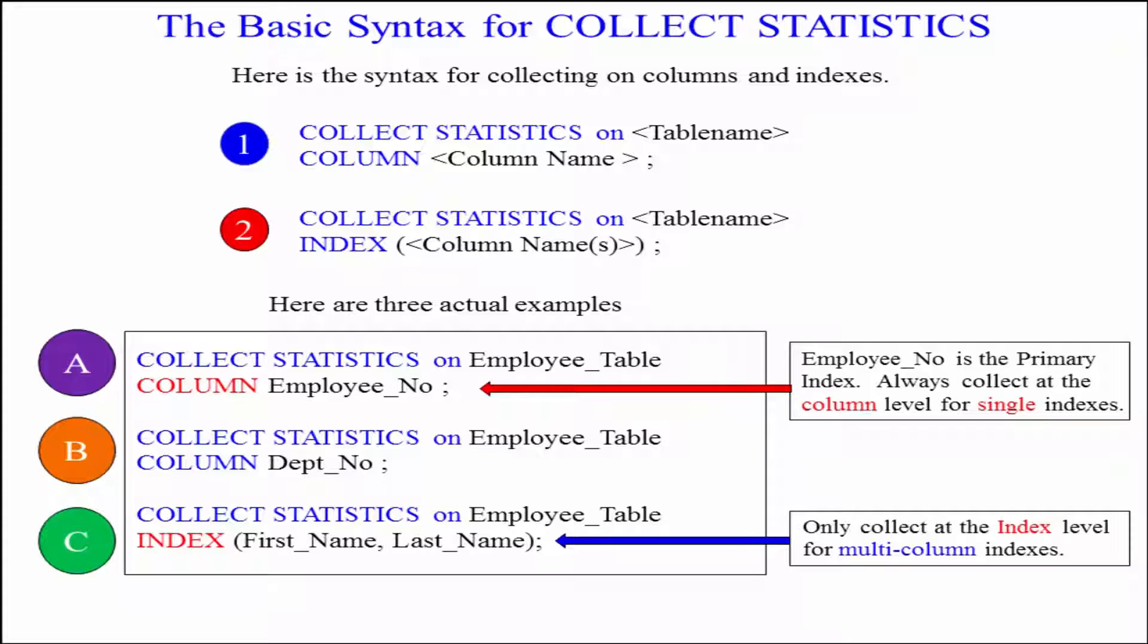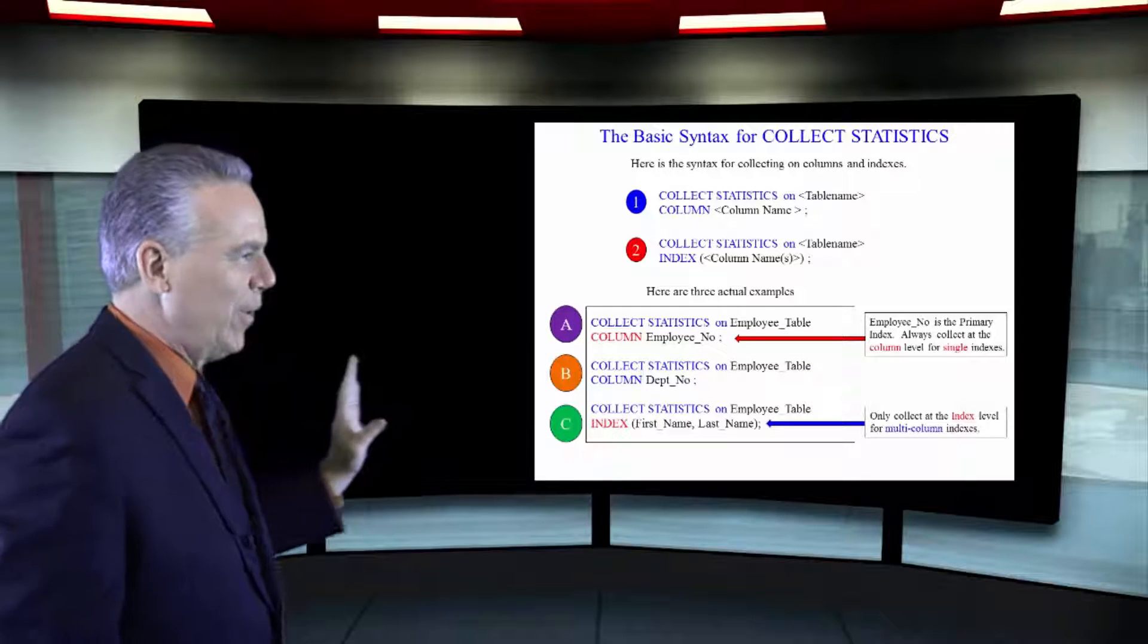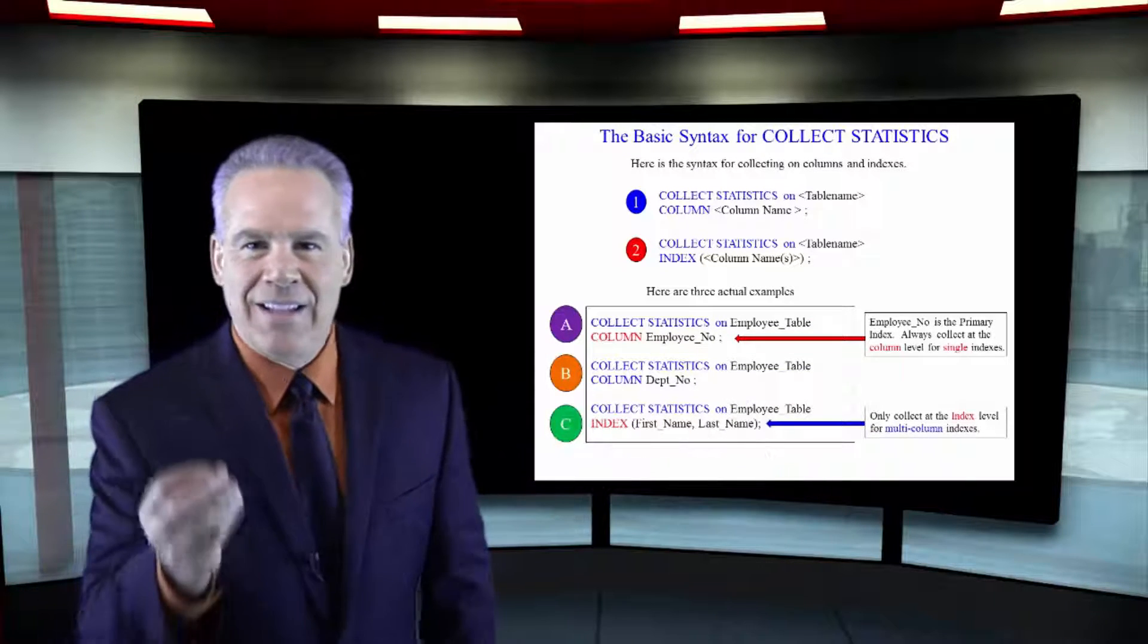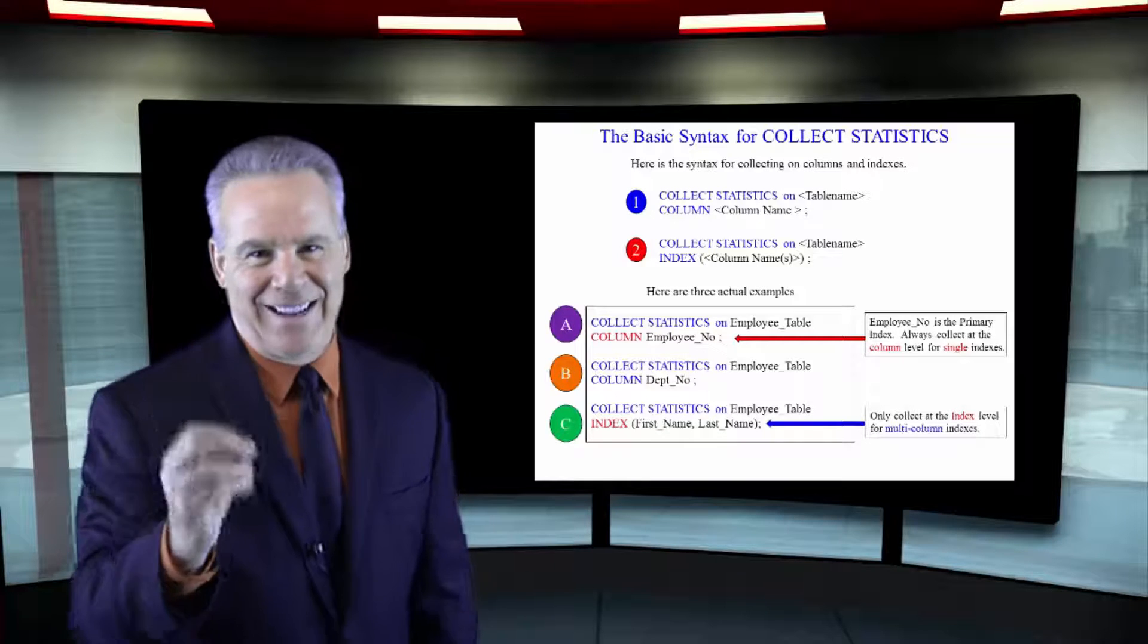But, you will always collect at the column level unless it's a multi-column index. Now, stay with us. I've got some examples here for you. In our first example, collect statistics on employee table, column, employee number. That's actually the primary index.